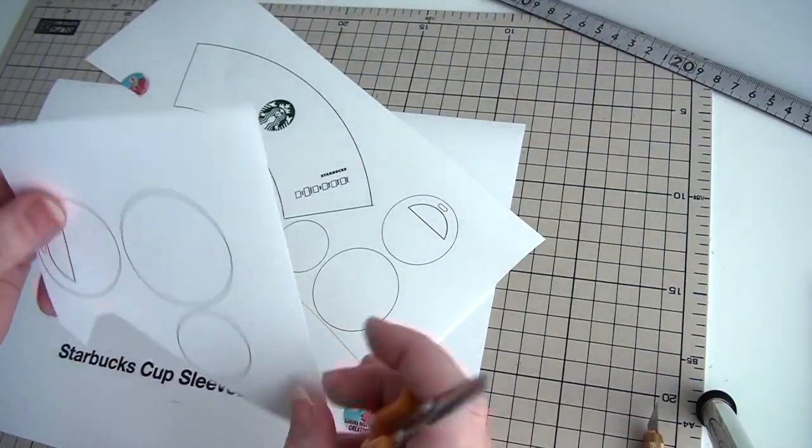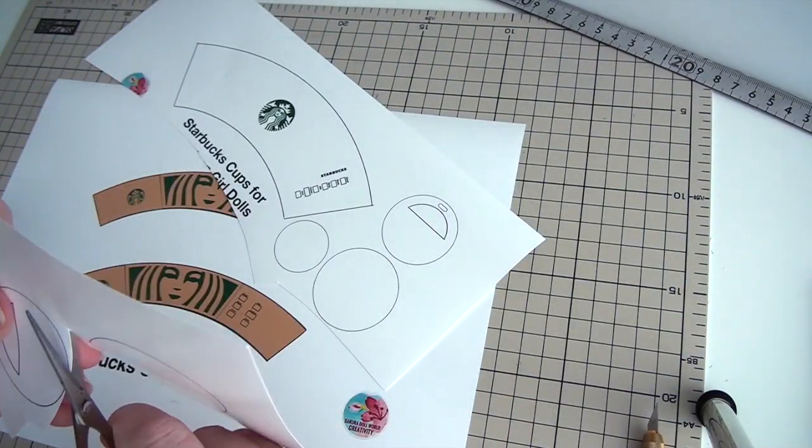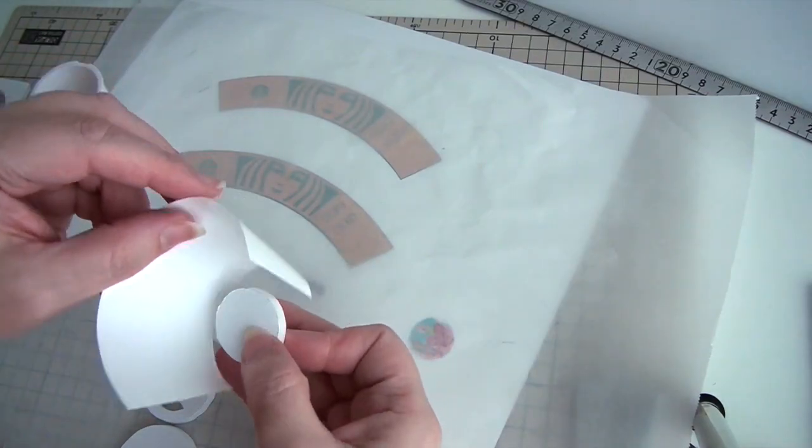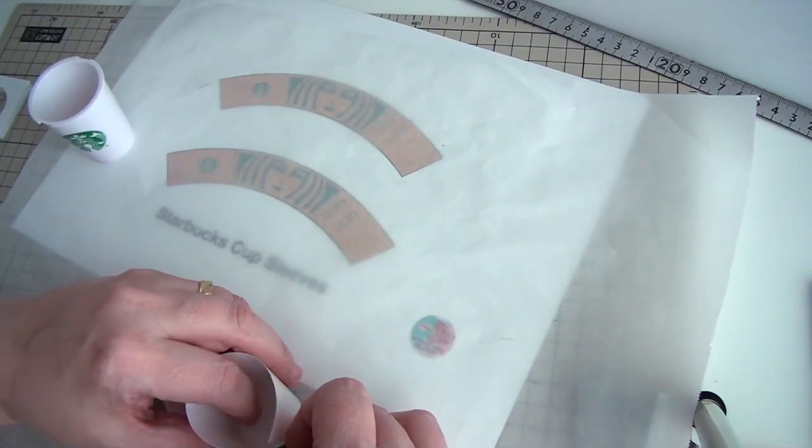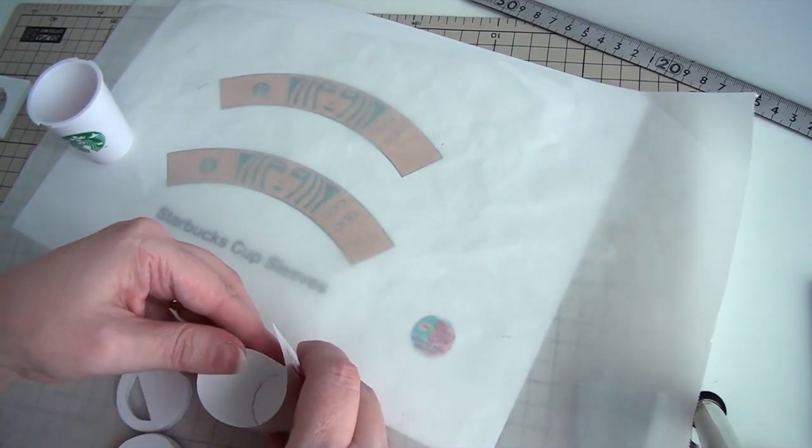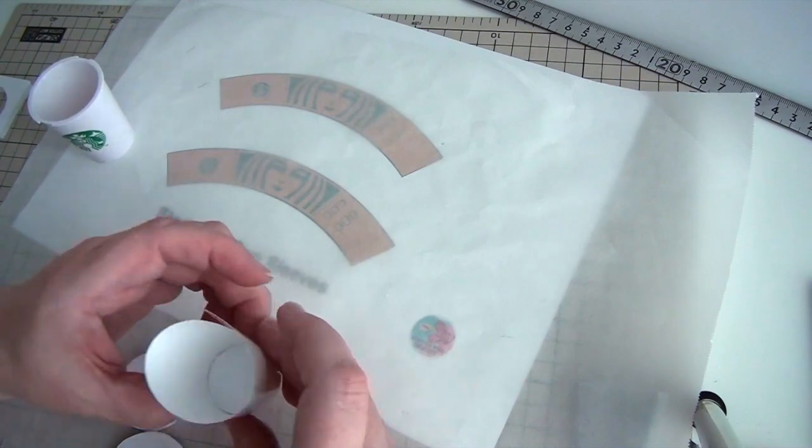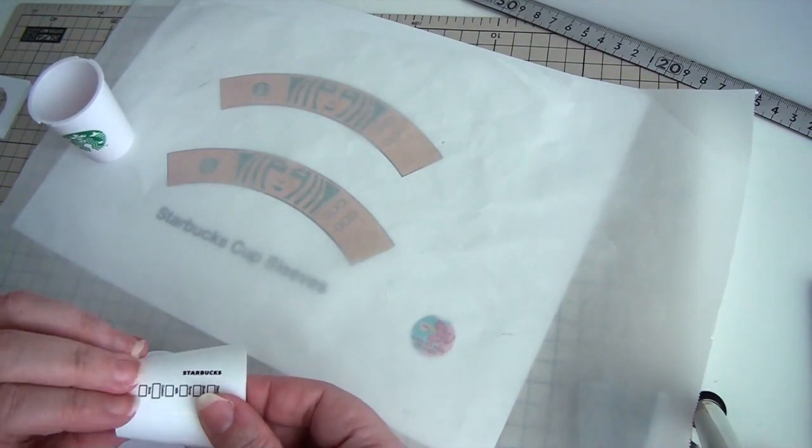Put the circle on foam board and cut them out. Glue the cup paper around the smallest circle. Use the biggest circle to check the opening. It should be just a little bit smaller than the circle. Glue the cup sides together too.